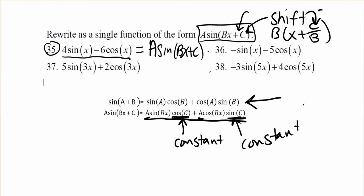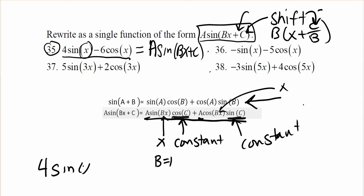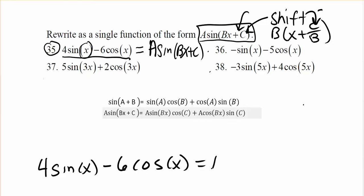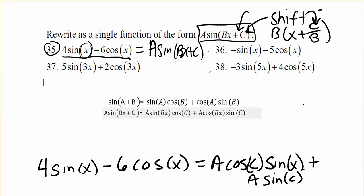In this case, b is equal to 1, so the bx terms simplify to just x. We can then write: 4 sine x minus 6 cosine x equals a·cos(c) times sine x, plus a·sin(c) times cosine x.